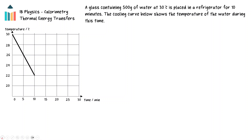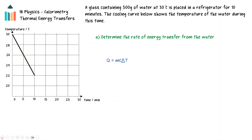Consider an example problem: a glass containing 500 grams of water at 30 degrees Celsius is placed in a refrigerator for 10 minutes. The cooling curve below shows the temperature of the water during this time. Determine the rate of energy transfer from the water. The graph features a sloping section in which the temperature of the water is decreasing, so the relationship q equals mc delta T applies here.